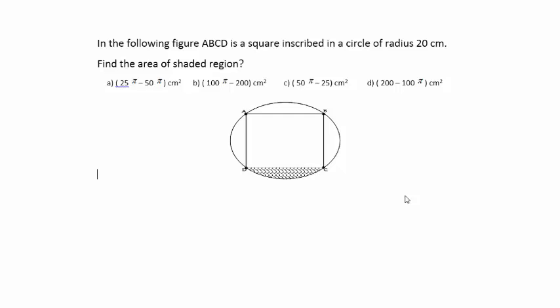Hello everybody, this is Pawan Jaiswal. Now let's try to see a question from mensuration. It is said that a square has been inscribed in a circle of radius 20 centimeter, means this is 20 centimeter.